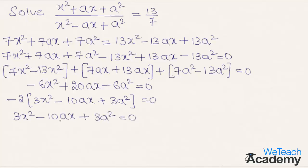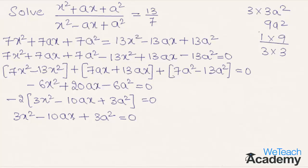Now let us factorize this expression. The coefficient of x squared is 3 and the constant term is 3a squared. Multiplying these gives 9a squared. The factors of 9 are 1×9 and 3×3. Since minus 1 and minus 9 sum to minus 10, which is the coefficient of x, we can split the middle term and write 3x squared minus 9ax minus ax plus 3a squared equal to 0.